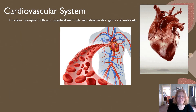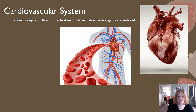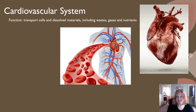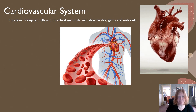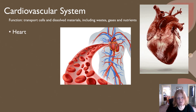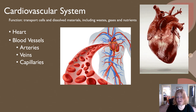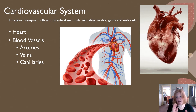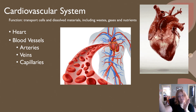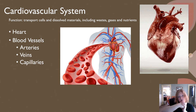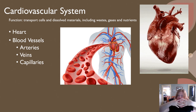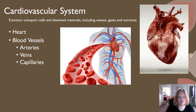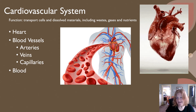Cardiovascular system. The cardiovascular system functions to transport cells, dissolved materials including waste, gases, and nutrients all around the body. It includes the heart and blood vessels — the three main categories being arteries, veins, and capillaries. Arteries carry blood away from the heart, veins bring blood back to the heart, and capillaries are where exchange happens — where arteries and veins mesh and connect together. And it includes blood.